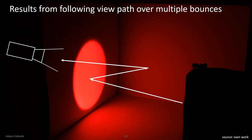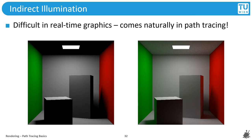Indirect illumination makes a tremendous difference. On the left, we see a rendering with 500 samples and direct lighting only. On the right, we have added light from up to three additional bounces. The scene is brighter, we can see clear color bleeding — like the red on the side of the tall cube — and it looks much less artificial. In real-time graphics based on rasterization, developers struggle to achieve these effects, but with path tracing they come almost naturally. The change needed to go from a direct light renderer to getting these effects is not that big.